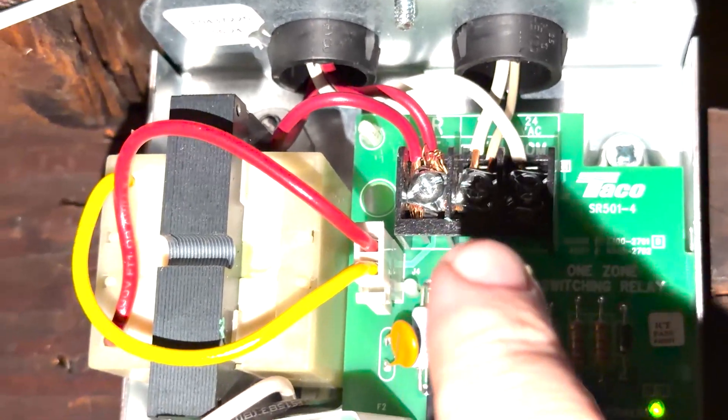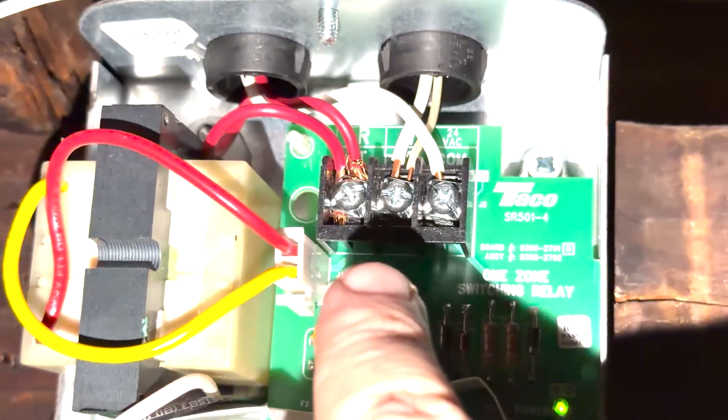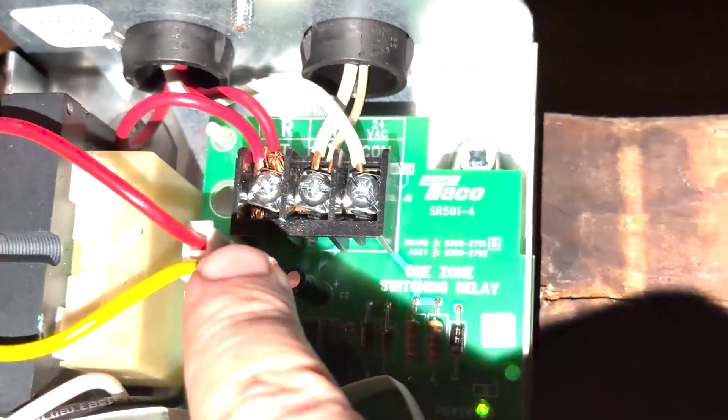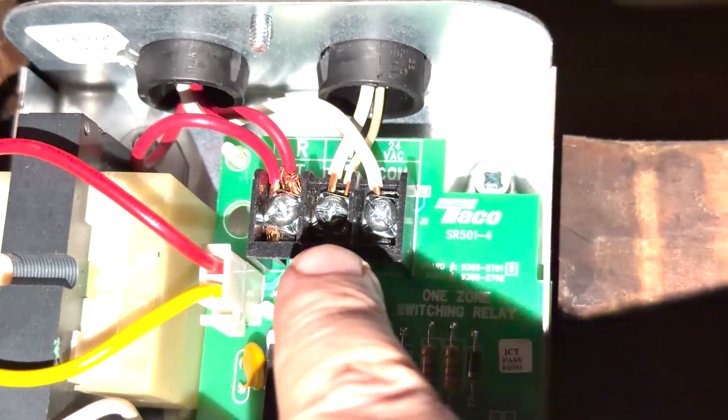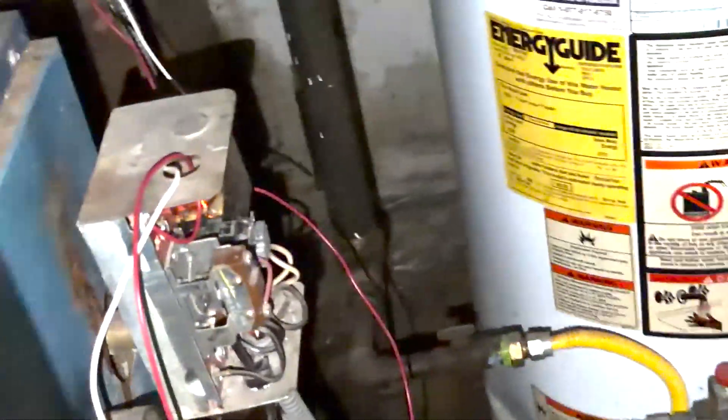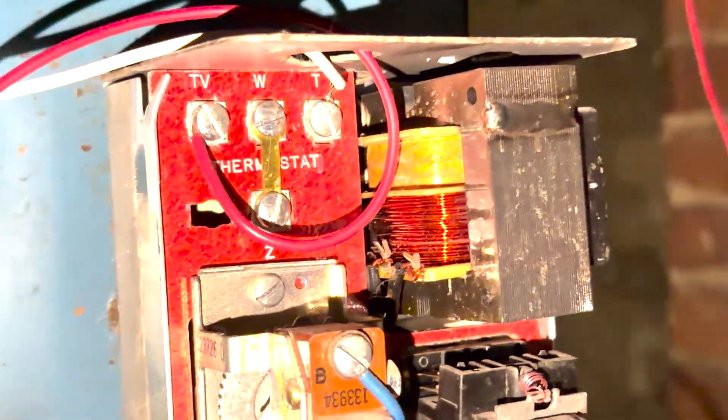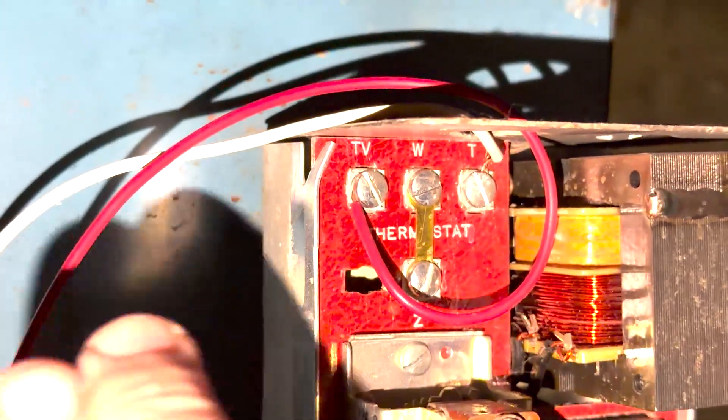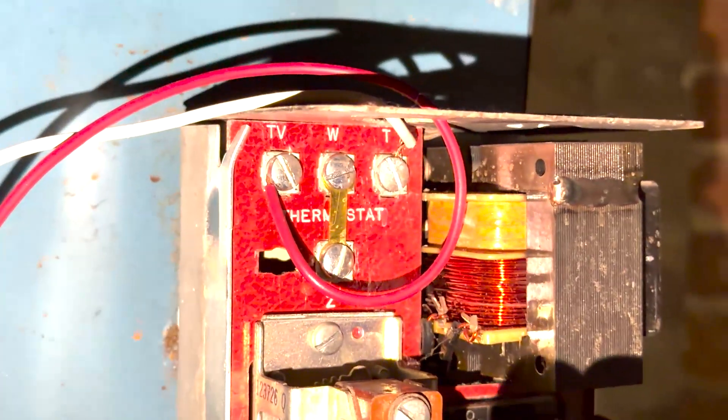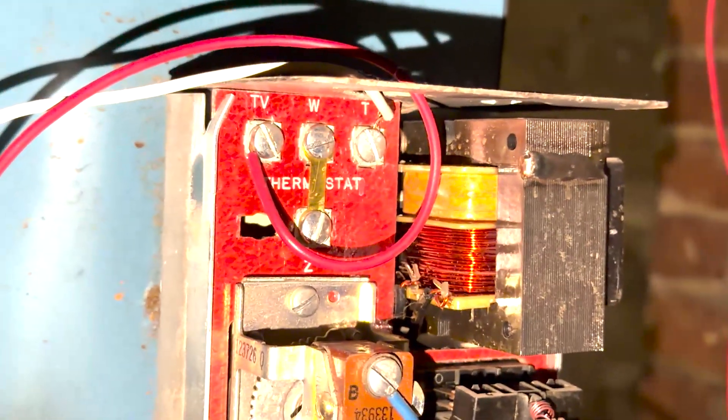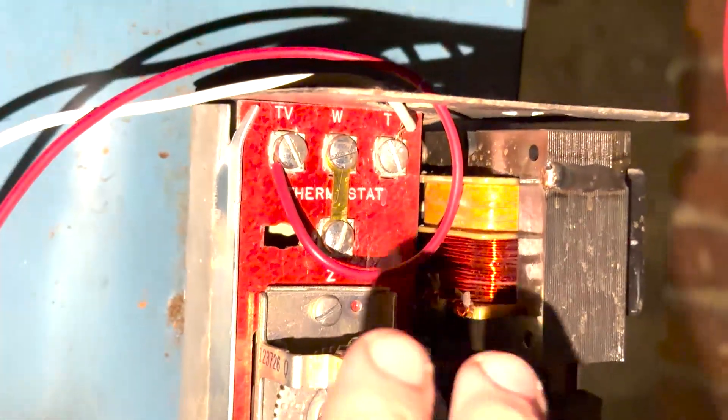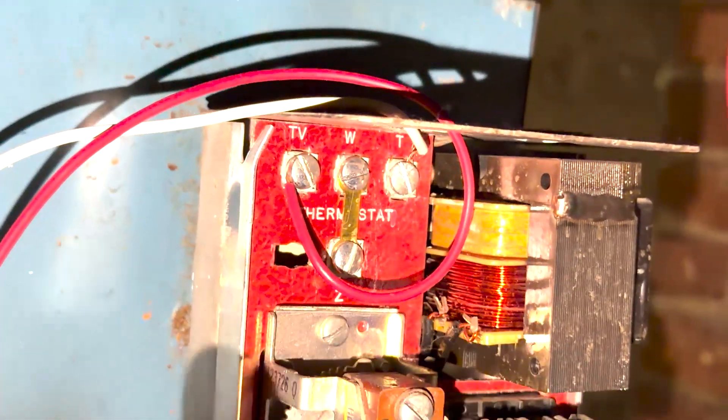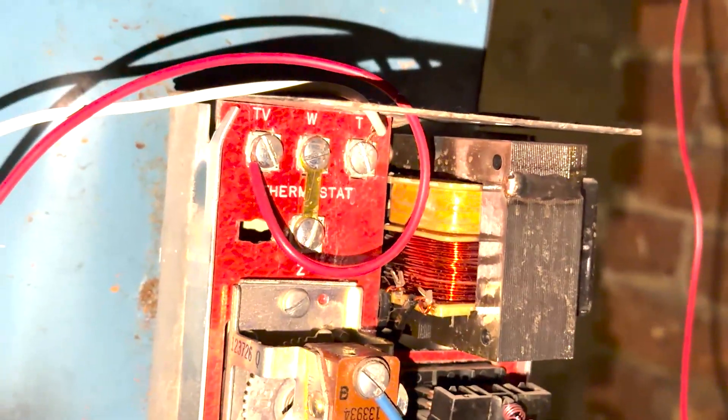Then you're going to go back to the Aquastat with two other wires. A red wire from the same terminal here and a white wire from this terminal here. And you're going to run those wires to this terminal key. As you can see, white and red. It doesn't matter which one of these terminals it goes to. They just have to go from either one of those TT terminals to these two terminals here. That's pretty much it.